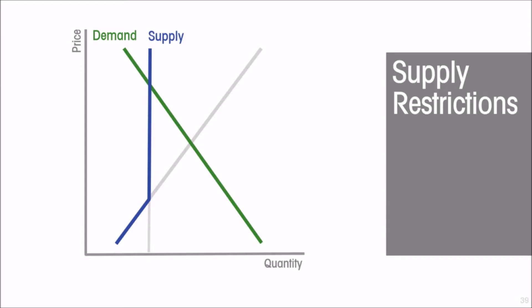Once we have constructed that, we analyze the market as we did before — the market clears where the demand and the effective supply curves cross. That determines the price, which is going to be a higher price than would have obtained at the free market equilibrium. So a quantitative restriction unsurprisingly results in a higher market price.